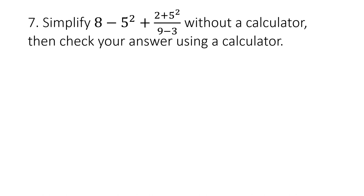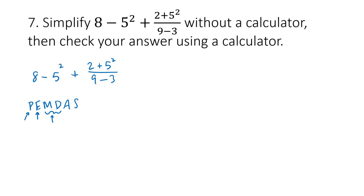For order of operations, evaluate (8 minus 5²) plus (2 plus 5²) all over (9 minus 3), using PEMDAS. The big fraction has implied parentheses — we must simplify the numerator and denominator separately before dividing. So we handle the top: 8 minus 5 squared, and 2 plus 5 squared is 2 plus 25, which is 27. The bottom is 9 minus 3, which is 6. Now exponents: 5 squared is 25.